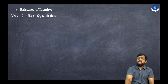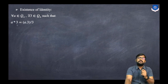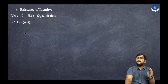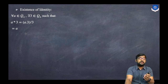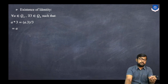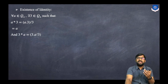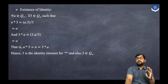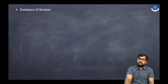For the existence of identity: for every a in Q+, there exists 3 in Q+ such that a star 3 = a·3/3 = a. So 3 is the identity element. By definition of identity, a star e = a, and here e = 3 satisfies that. Similarly, 3 star a = a also holds, confirming 3 is the identity element.